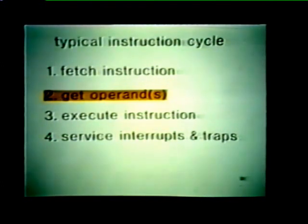Now the processor can retrieve the operand or operands specified by the decoded instruction. If the operand is stored in one of the general purpose registers, no further operations are required. Data stored in the GPR is internal to the processor — no bus cycle is required. Therefore, the processor can go directly to the execute operation.